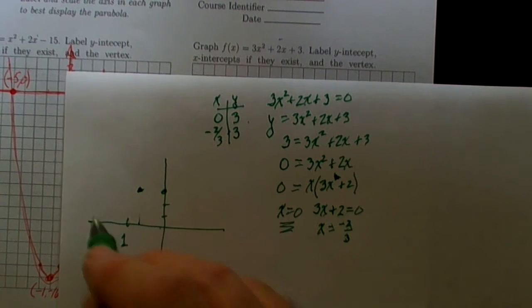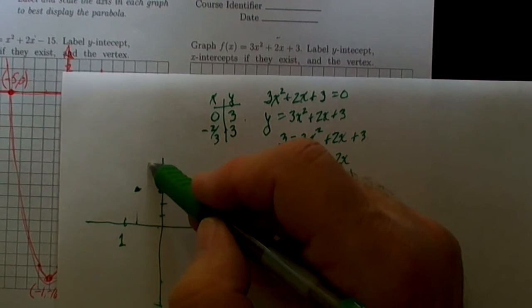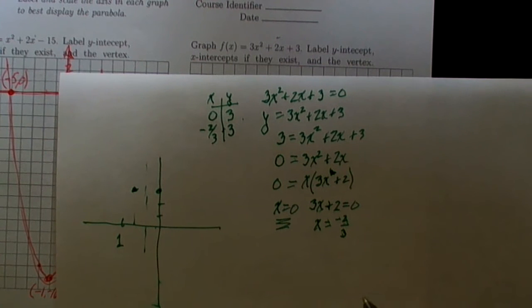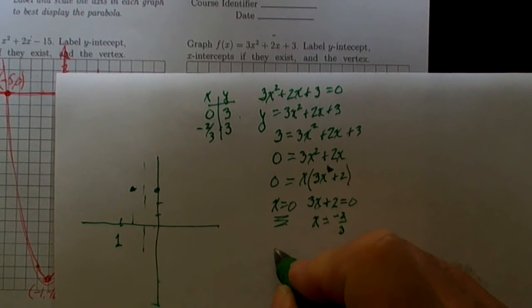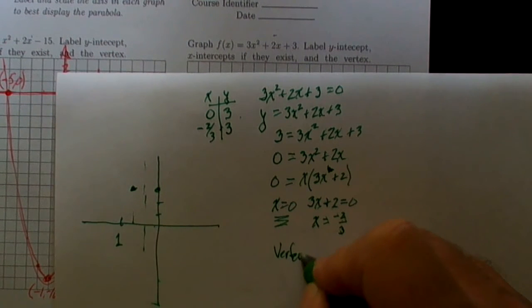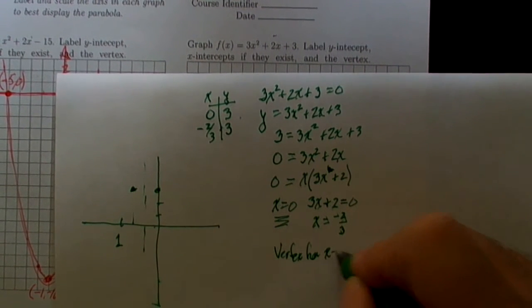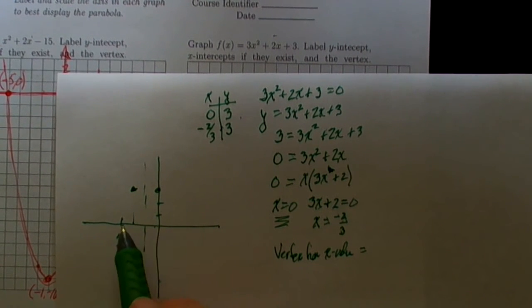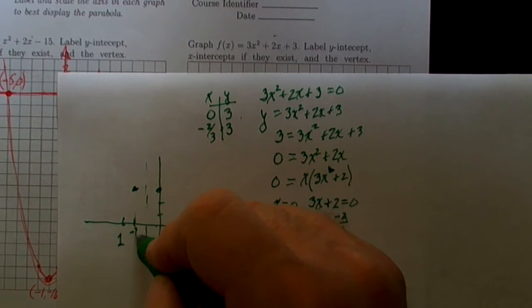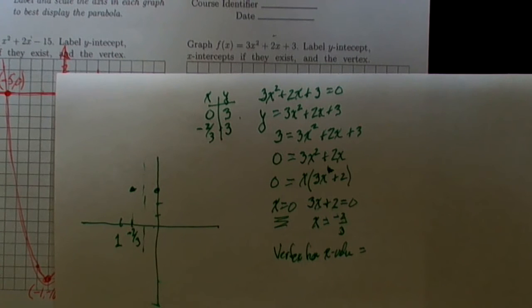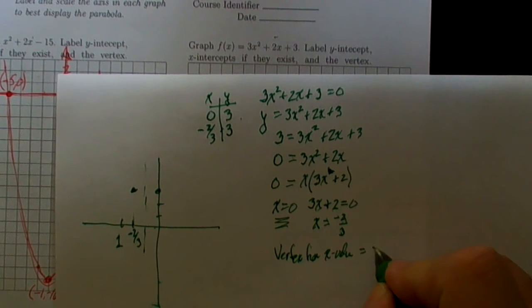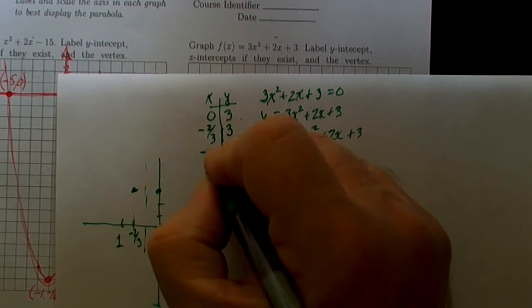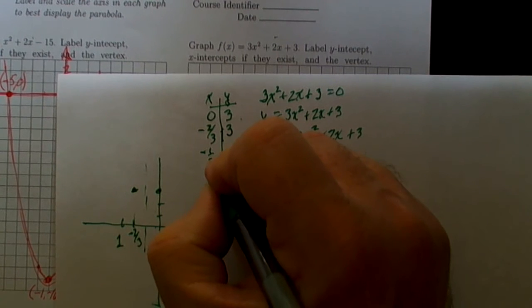Because those are the same height, the axis of symmetry will have to be halfway between those two. So the axis of symmetry, the vertex, has x value equal to half of this distance from 0 to minus 2/3. Half of the distance between 0 and minus 2/3 is minus 1/3.